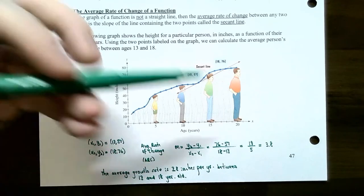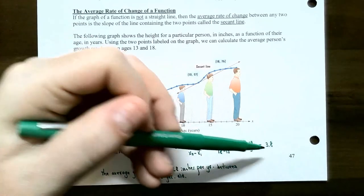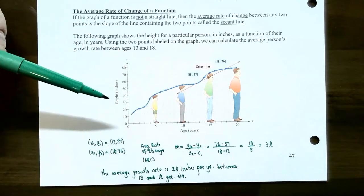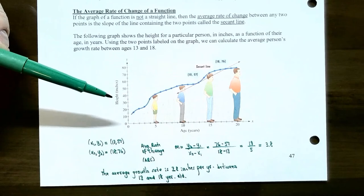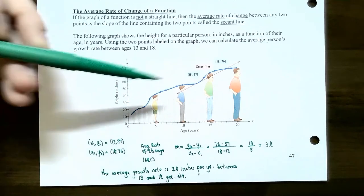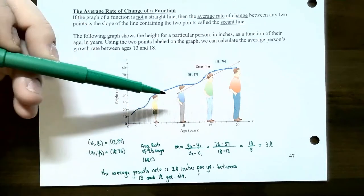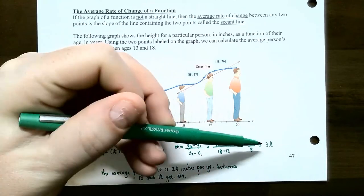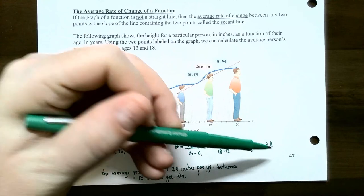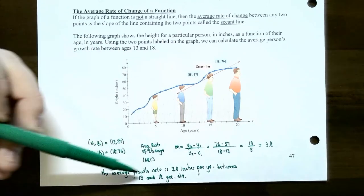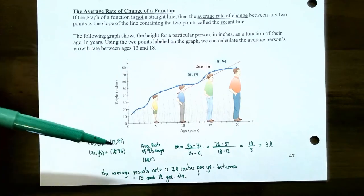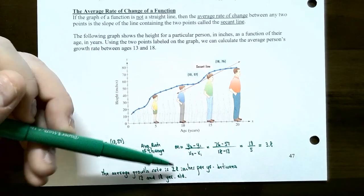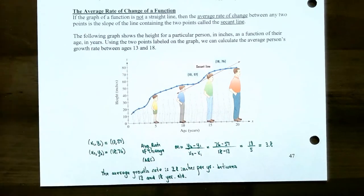Notice that this answer, 3.8, depends on the two points we chose. If we chose any other two years, our answer would be different. So this average rate of change, or average growth rate, is specific to ages 13 and 18.